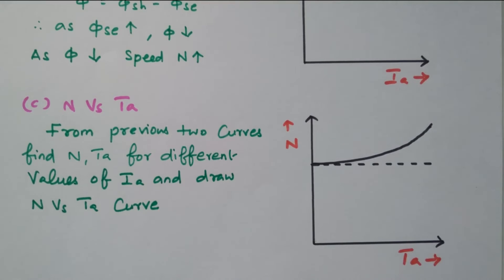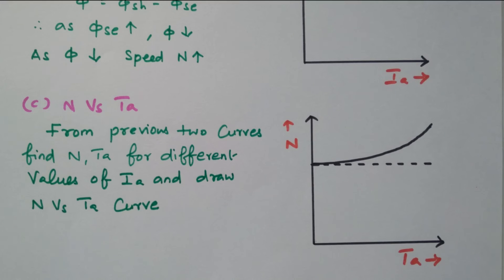In this video, we discussed the characteristics of a compound motor. There are two types: cumulative compound and differential compound. In cumulative compound, the fluxes are added together; in differential compound, the fluxes oppose each other. Subscribe to this channel for more videos and notifications. The soft copy of this material is available in the drive; the link is given in the description box.